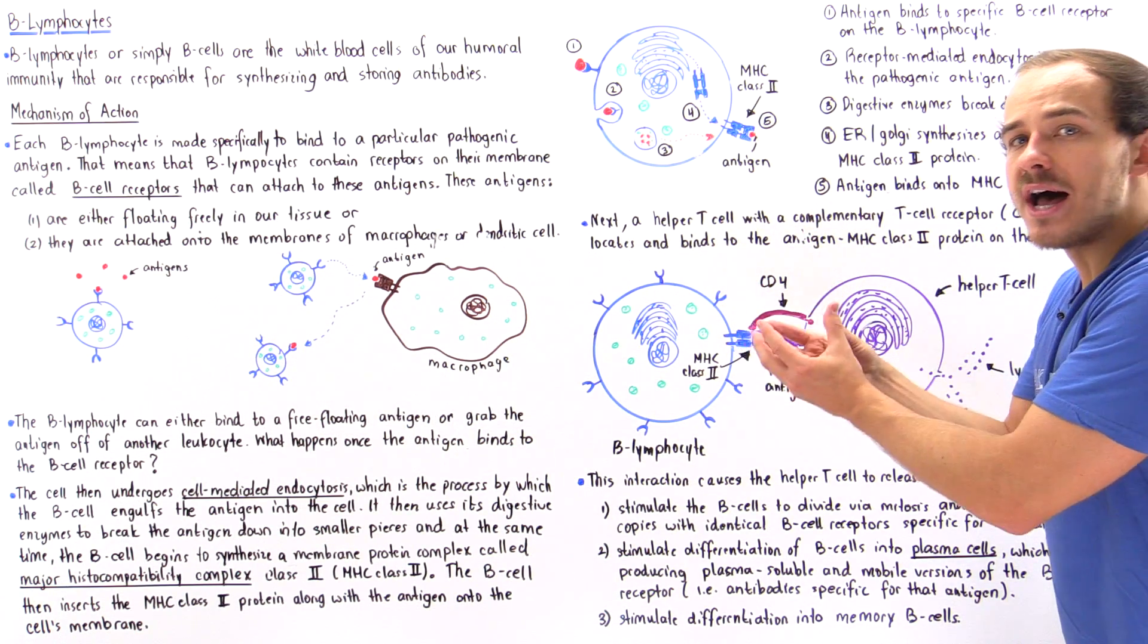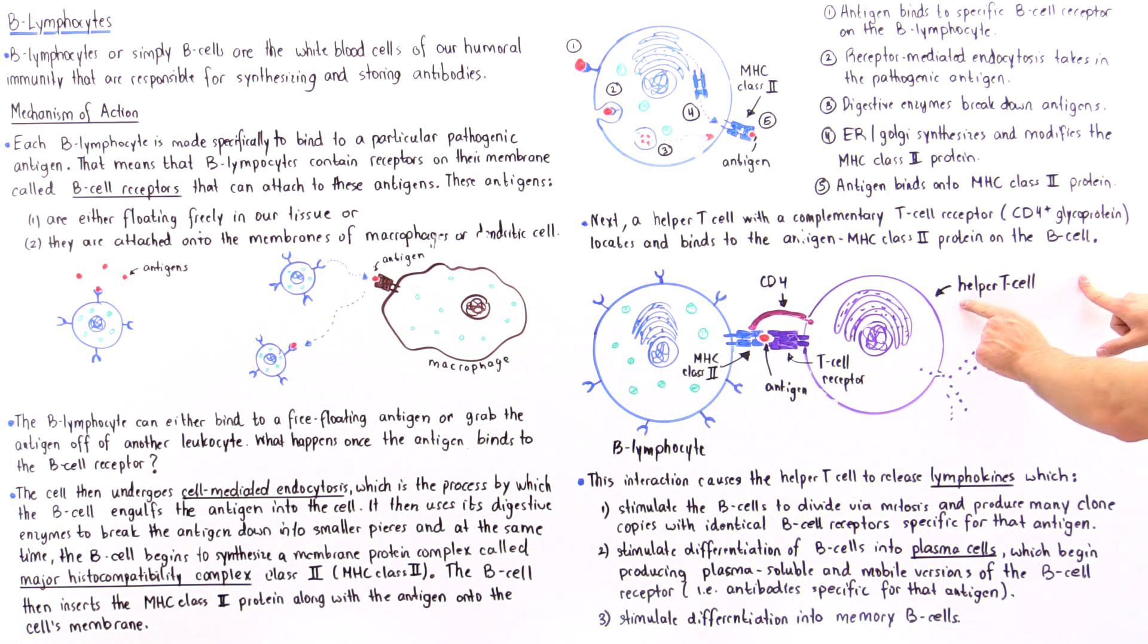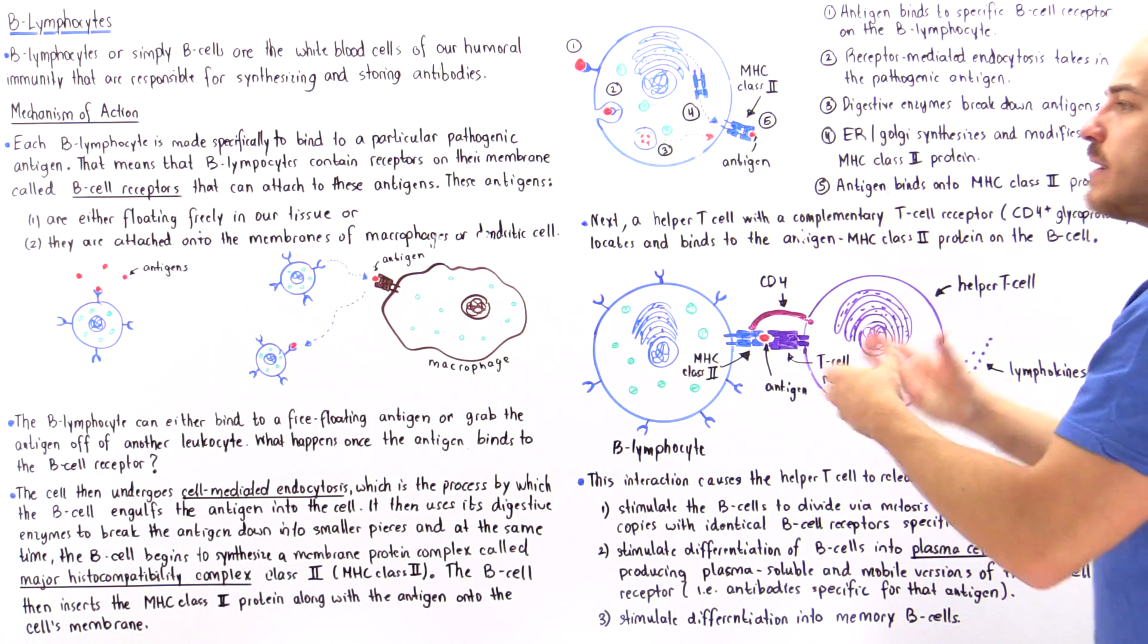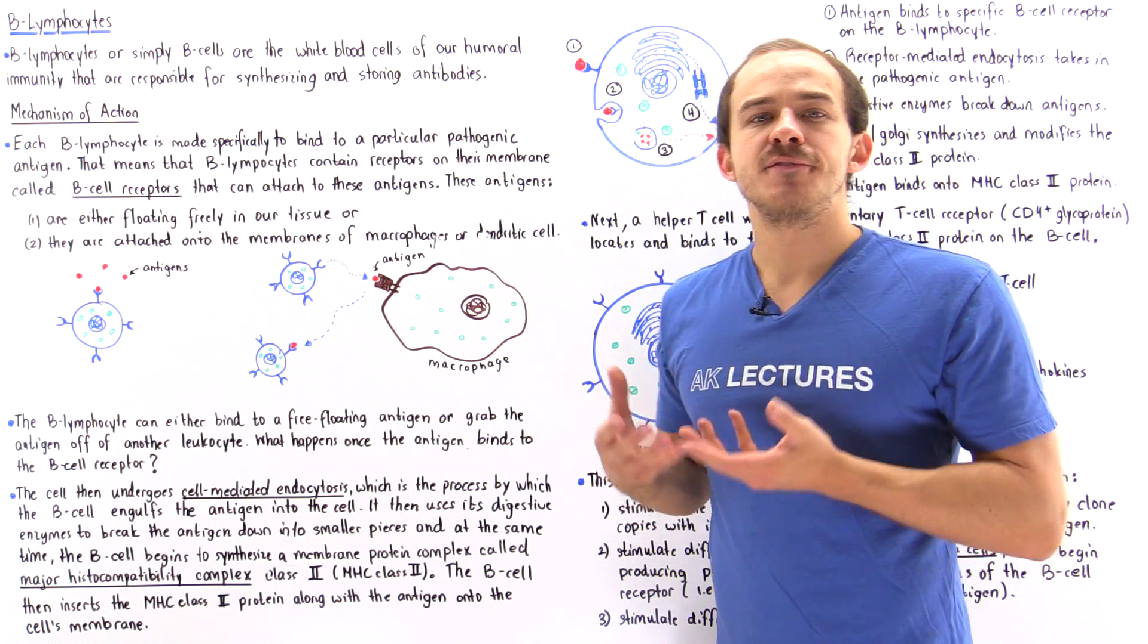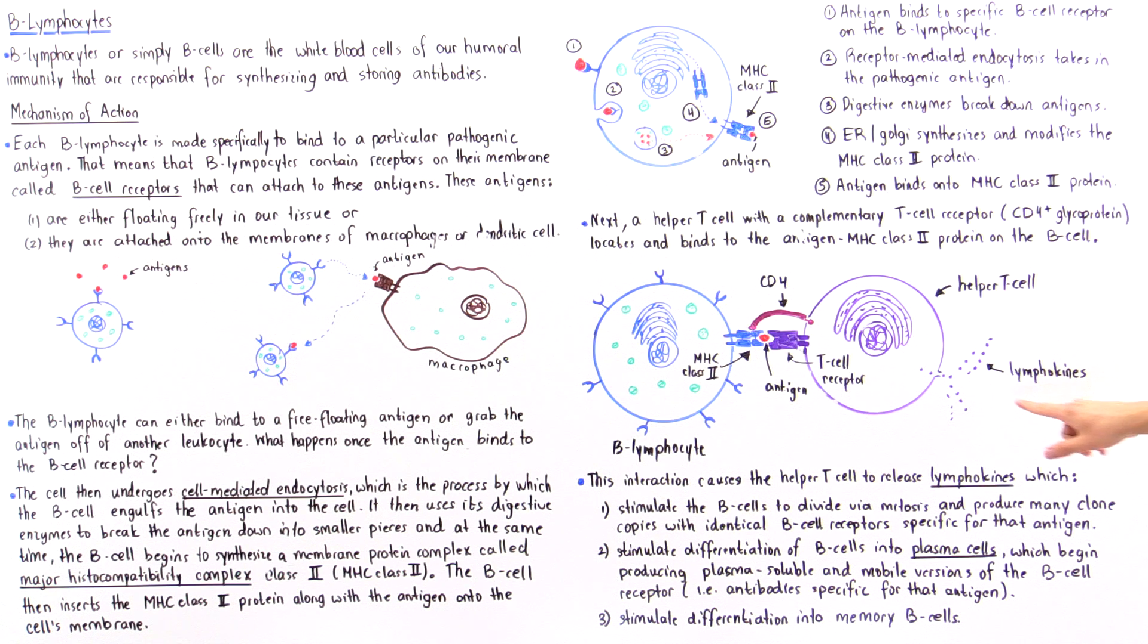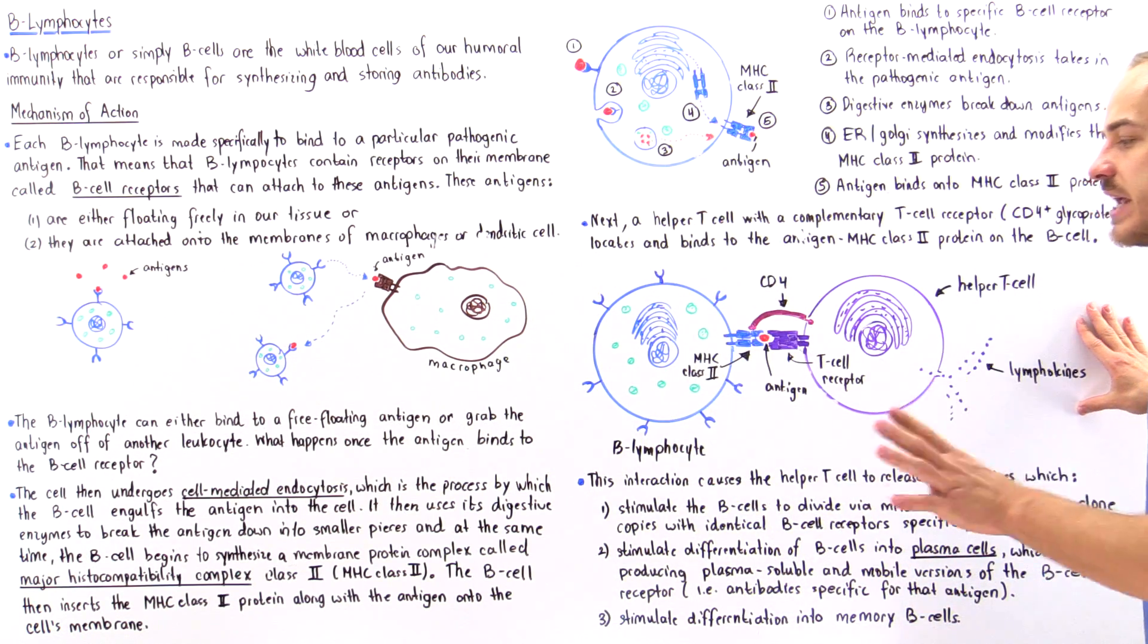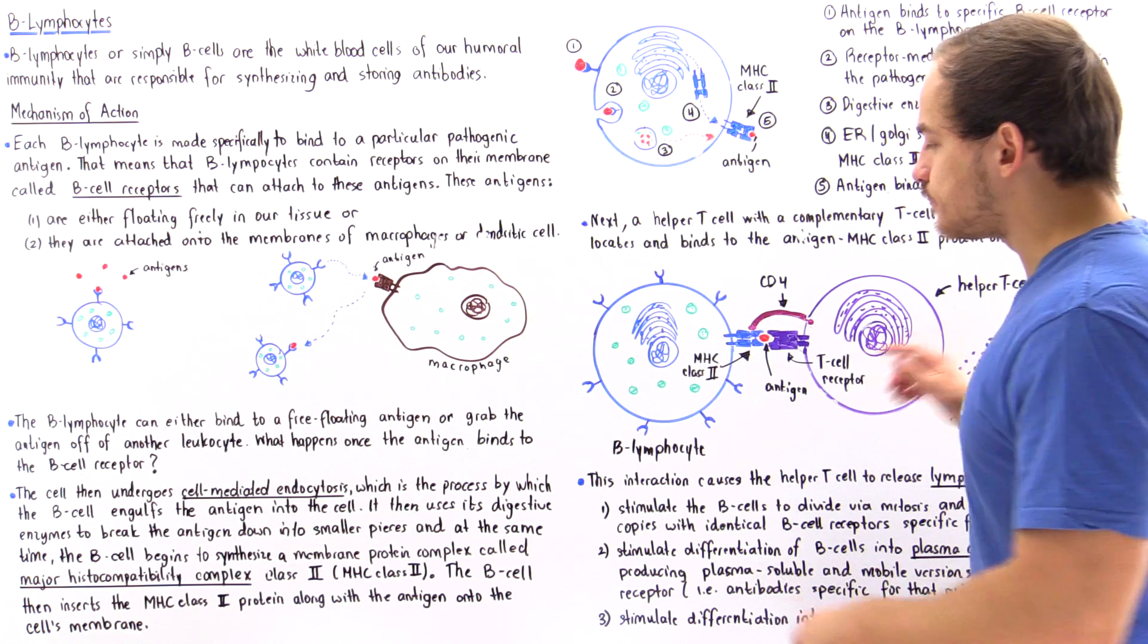Once this binding process takes place between the B lymphocyte and the helper T cell, we begin to initiate different defensive responses. The helper T cell releases lymphokines, and these chemicals initiate the process of cloning.